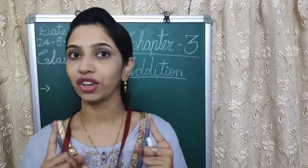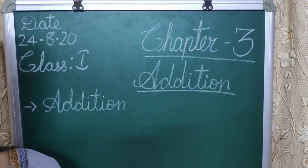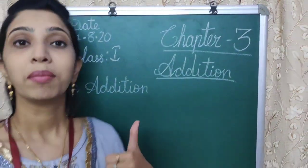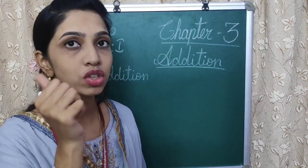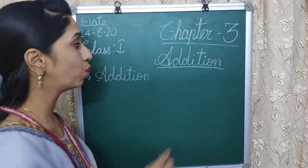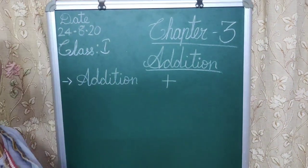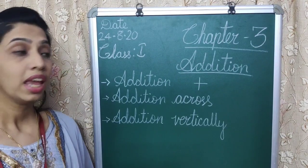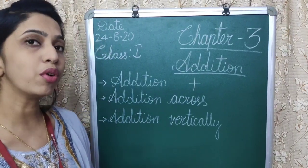This is Vajiha Gosar, your Mathematics teacher. In the previous classes, we have learned Chapter 3, Addition, for Class 1. Addition means putting objects together by counting. It is called addition. We use the plus sign — it is very important for addition. In addition, we have two ways to solve the problems.